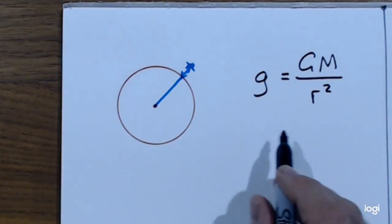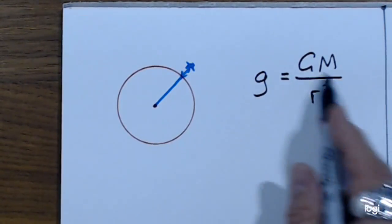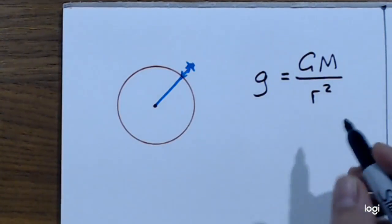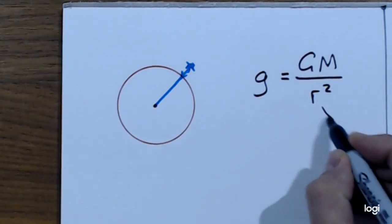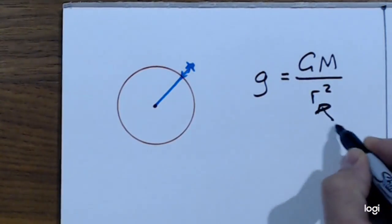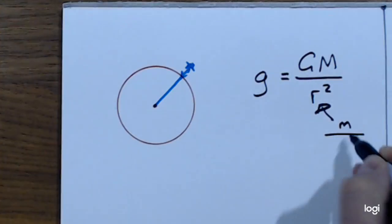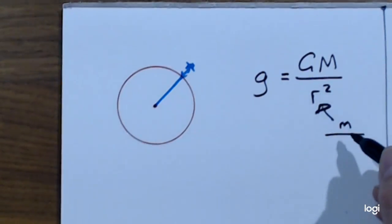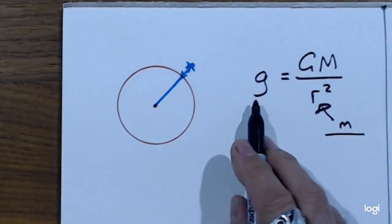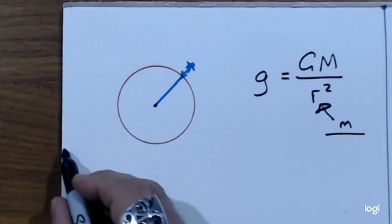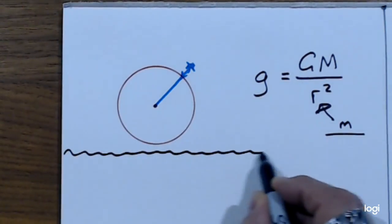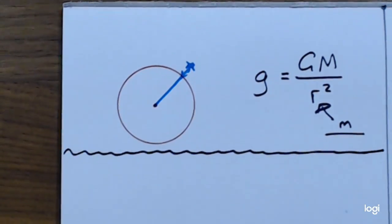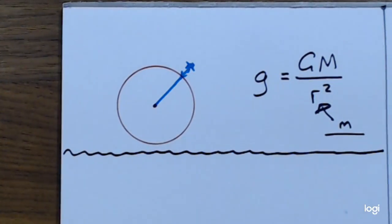The only way you're going to get this wrong is either forget the formula or use the wrong units. This has to be in metres — you've got to get the units right. If you put it in kilometres, you're going to be out by a factor of a million. The answer is 8.68. So it's 9.8 metres per second squared at the surface, and a little bit less further out.